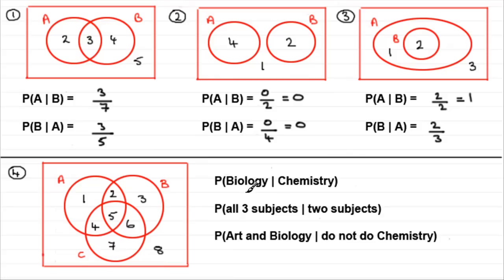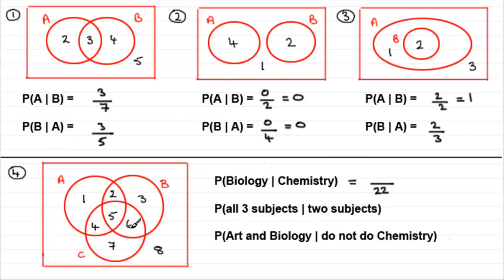Let's run through these. First: probability that someone does biology given that they do chemistry. We know they do chemistry, so how many people do chemistry? That's the denominator — add up four, five, six, and seven, which gives 22. Of those 22 people doing chemistry, how many do biology? That would be the five who do all three, plus the six who do biology and chemistry — a total of eleven. So it's eleven out of 22.